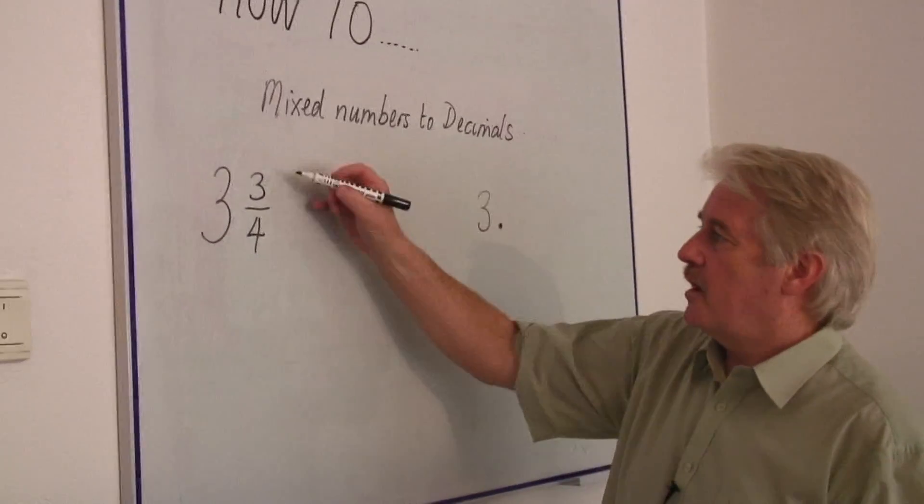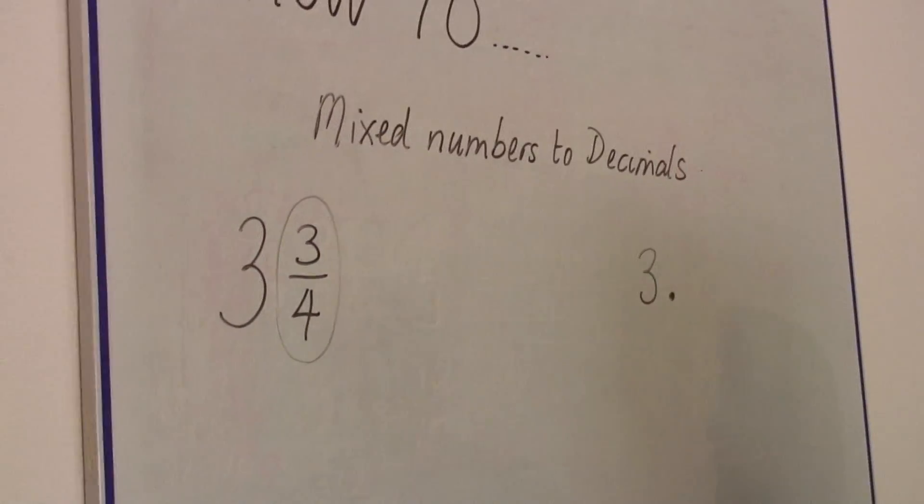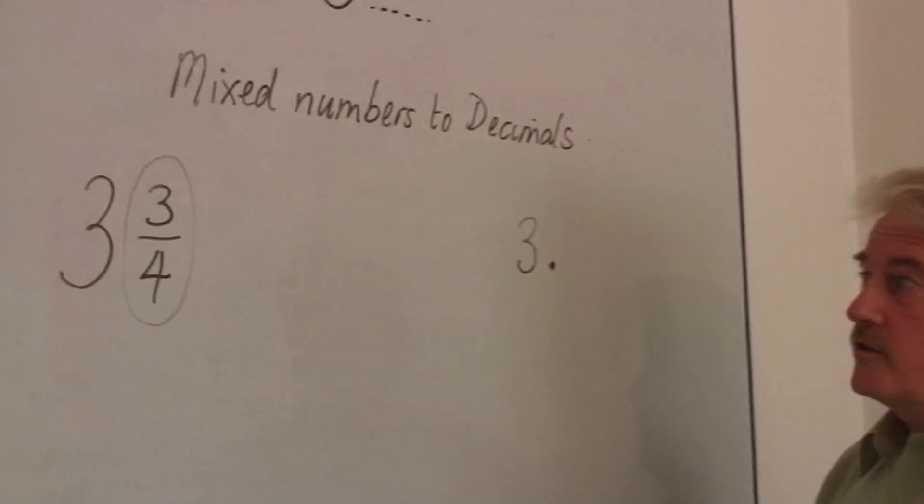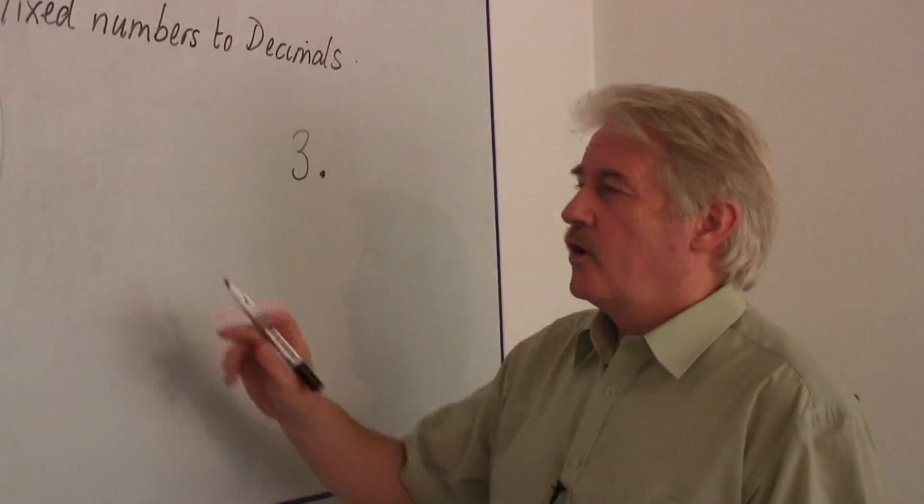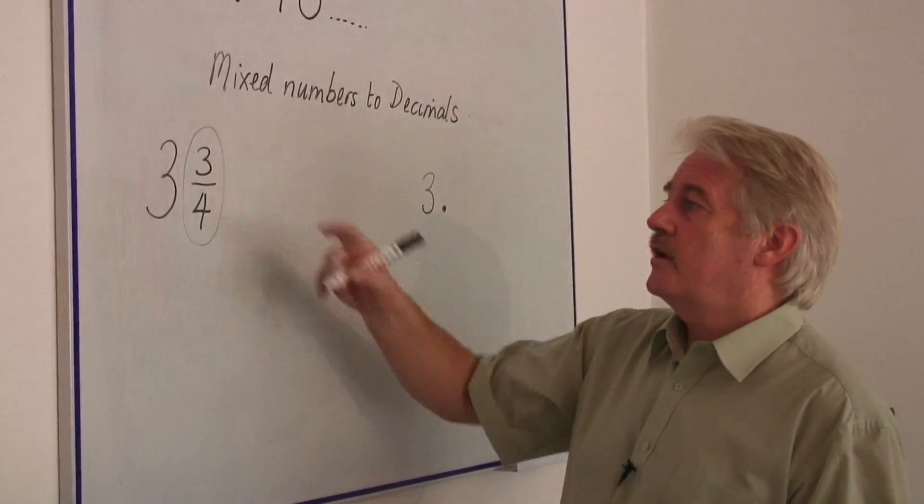So the decimal part comes from the three quarters. So what is the three quarters as a decimal? There are several ways of doing this. We can simply, for example, divide four into three.